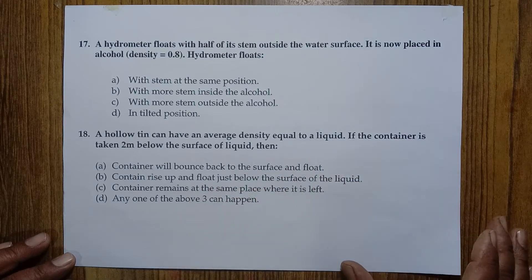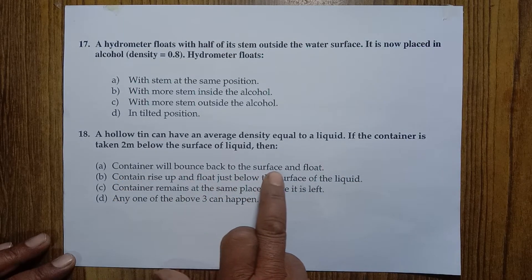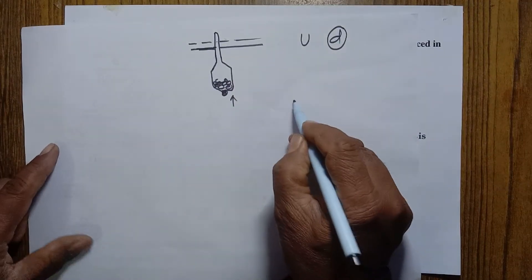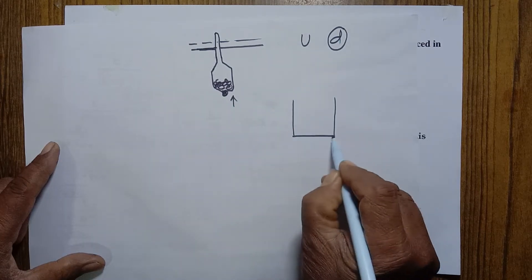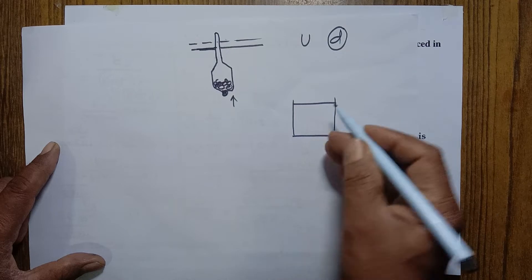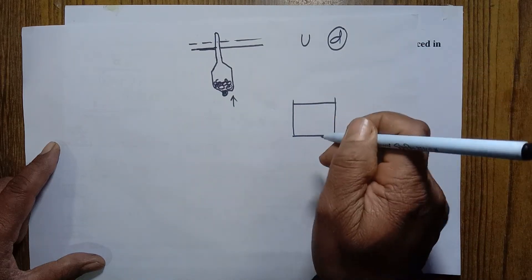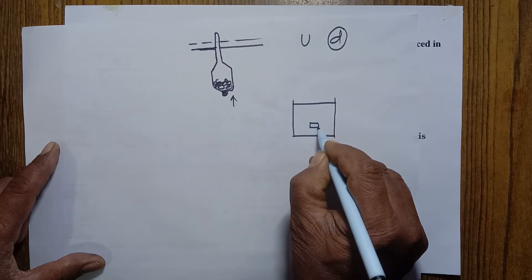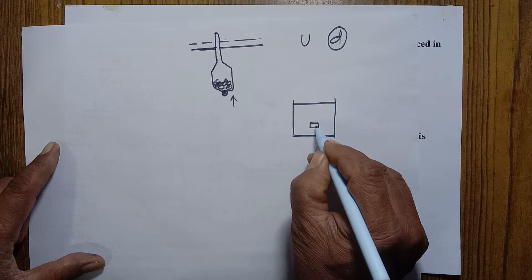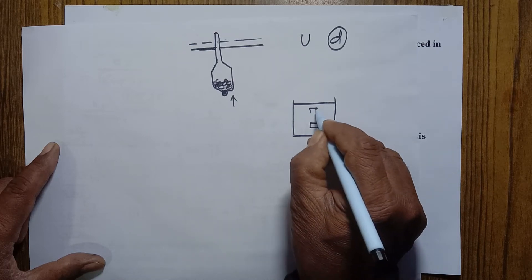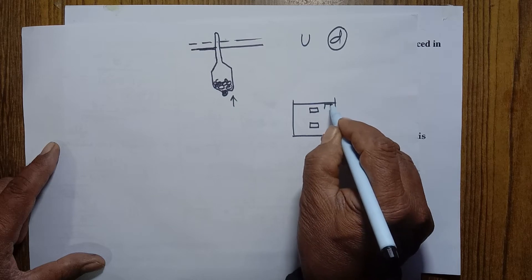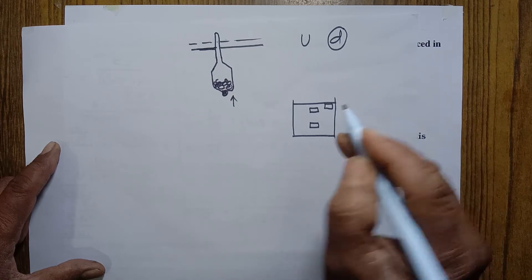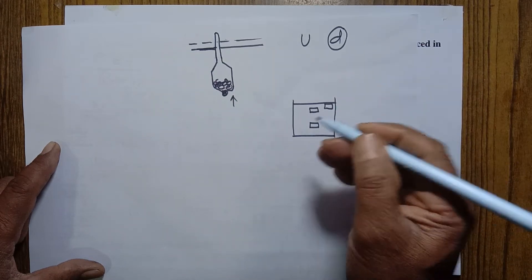Question 18: a hollow tin can has an average density equal to that of a liquid. If the container is pushed two meters below the surface of the liquid, what happens? Options: it bounces back to the surface and floats, it rises up and floats just below the surface, or it remains at the same place where it is left.